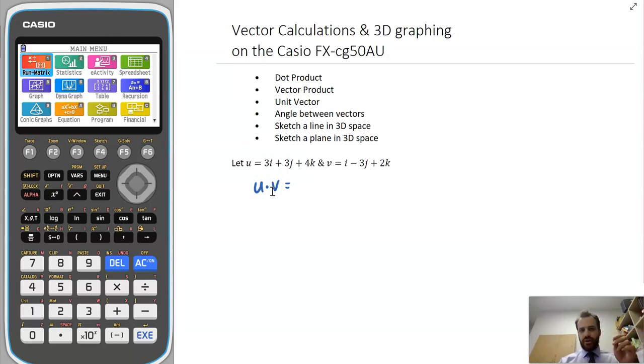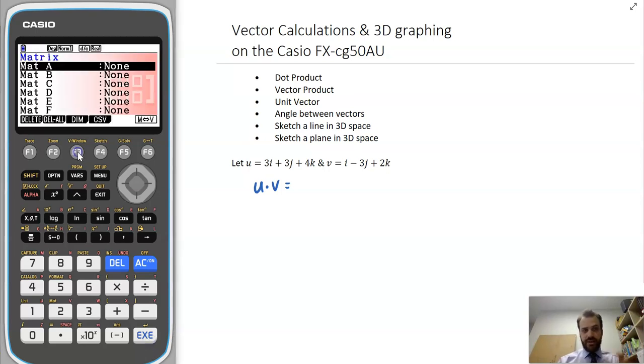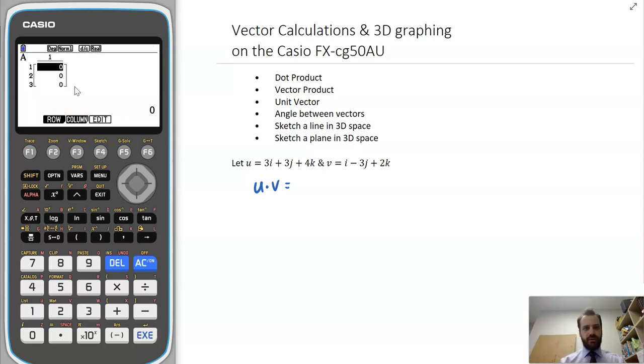Two vectors here, and I'm going to find the dot product of them. I'm going into the run matrix here, I'm going into matrices vectors. And now I need to enter them both as vectors. So I just need to change this M to V, and that will turn them into vectors. Press execute on the first one. And then you need to give the dimensions. So they'll all be either two-by-ones or three-by-ones. So this is a three-by-one.